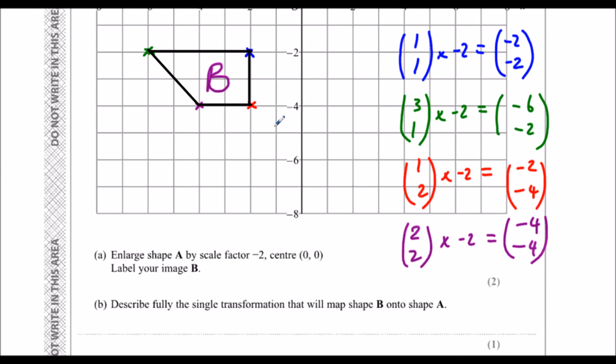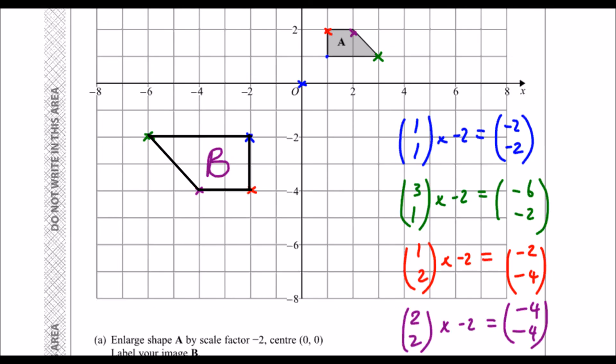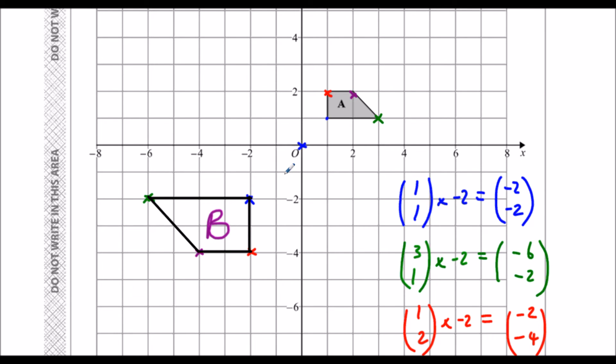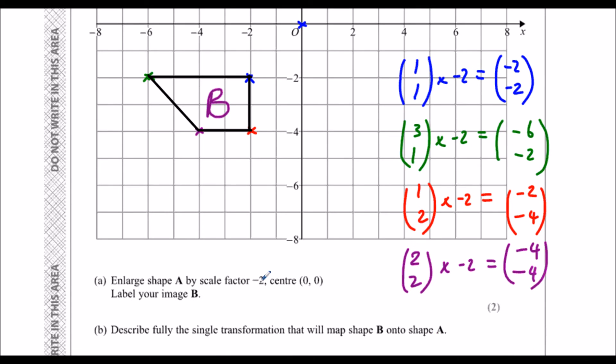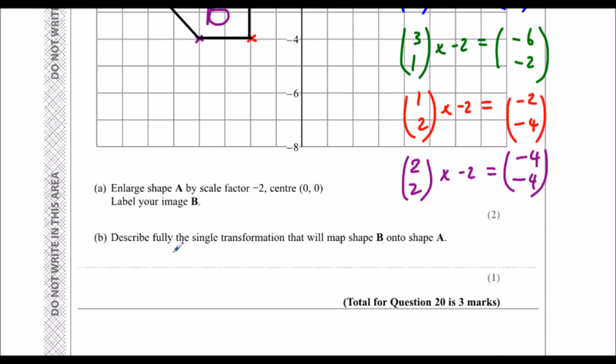Describe fully the single transformation that goes from B back to A. So how do we undo this transformation? So it's an enlargement. Scale factor is going to have to be minus a half. So to undo times by minus 2, you times by minus a half. So that will undo it. It would be the opposite. So it's exactly the same as this. So enlargement, scale factor minus a half, center 0, 0.